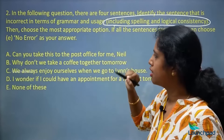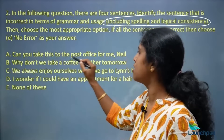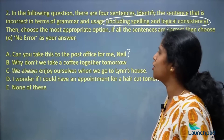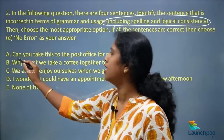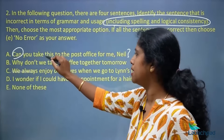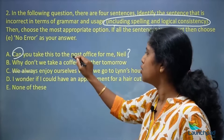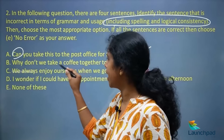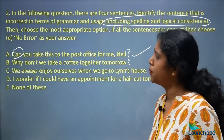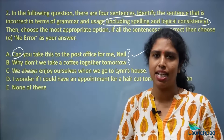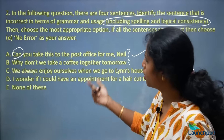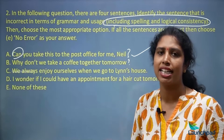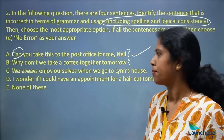Let's read each sentence. First: 'Can you take this to the post office for me, Neil?' — that is correct, it's a proper question. Second: 'Why don't we take a coffee together tomorrow?' — when you want to consume a drink, you say 'drink' or 'have.' We say 'Why don't we drink a coffee' or 'Why don't we have a coffee.' We never say 'take a coffee' in written form.